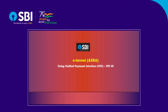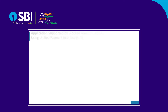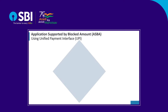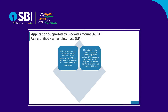Welcome to this video on e-invest ASBA using UPI ID. ASBA means Application Supported by Blocked Amount. The Securities and Exchange Board of India has mandated that all investors, except anchor investors applying in an IPO, are required to only use the ASBA facility for making payments. SEBI has made it mandatory for retail investors applying through registered brokers, depository participants and RTAs to invest in IPOs through the UPI route.